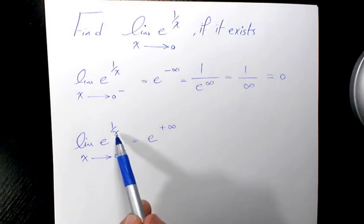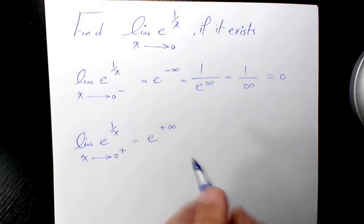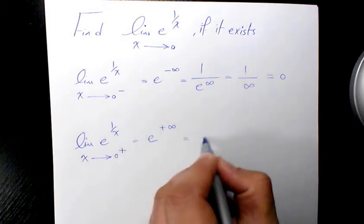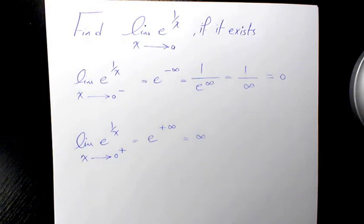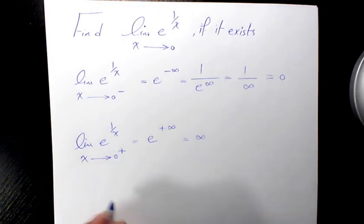very small denominator and it is positive, so 1/x is going to be positive infinity and that's going to be infinity. Now since the left limit and right limit are not equal, you're going to say that the